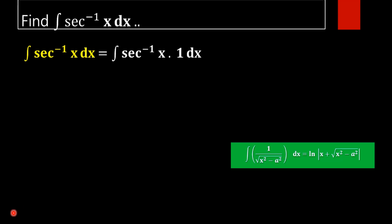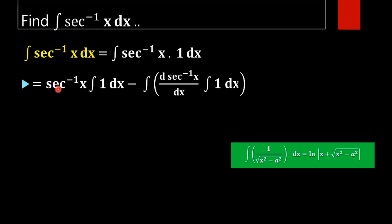On applying that method, we will get sec inverse x into integral of 1 dx, minus the derivative of sec inverse x into integral of 1 dx, whole integral. That is, integration by parts is: u into the integral of v, minus integral of du by dx into integral of v, whole integral of dx.